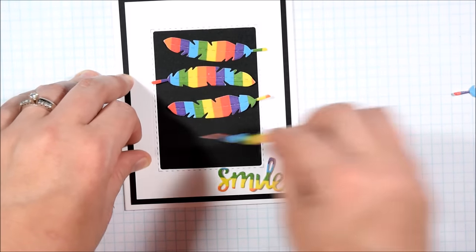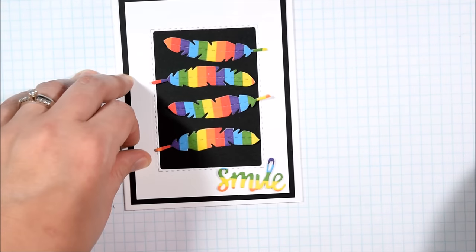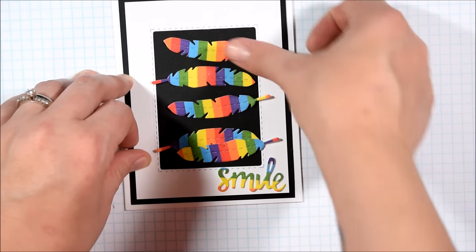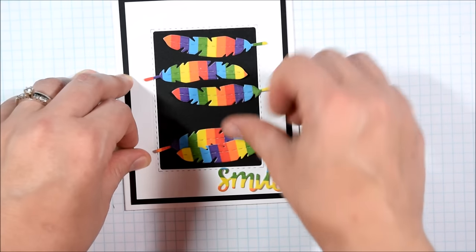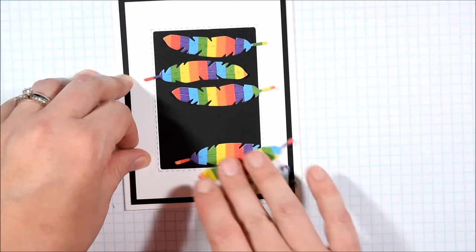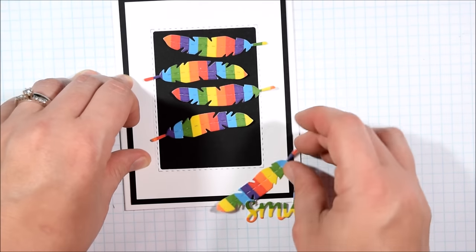When I use rainbow coloring, I often tend to pair it with black and white as that really makes the rainbow elements pop in my experience, so that's why I chose the rest for my color scheme.